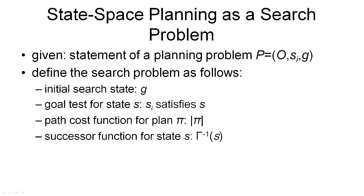Now, given these definitions, we can define the search space for backward search planning. The input to the algorithm is again a planning problem consisting of a set of operators, an initial state, and a goal description. The search problem is then defined by four components. First, the initial state for our search is not the initial state in our state space, but the goal — we're searching backwards from the goal, and in our search space the goal is the initial state. Since the goal is our initial state, we need a new goal test for the search space, and this goal test is that the initial state in our problem specification satisfies our sub-goal S.